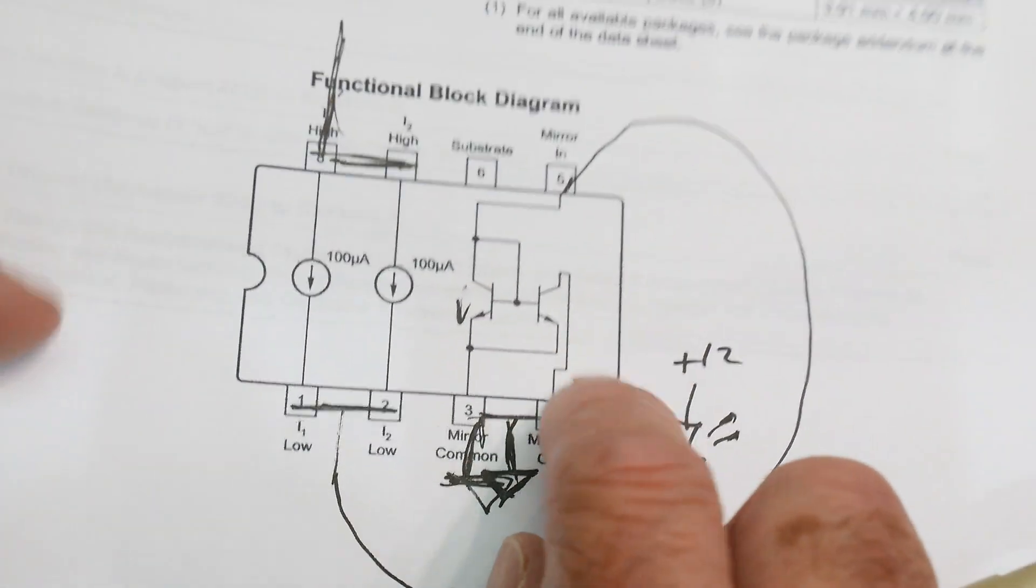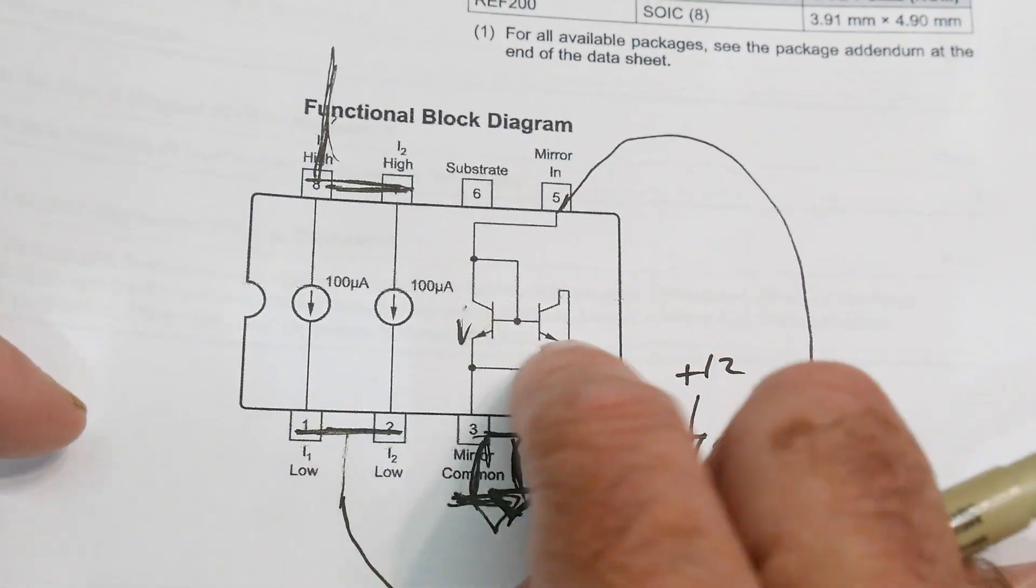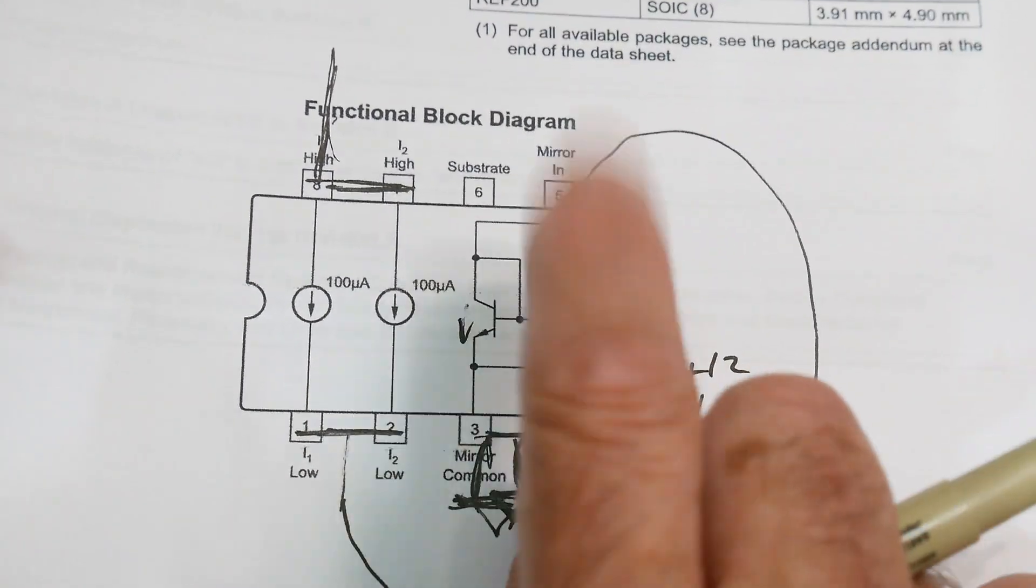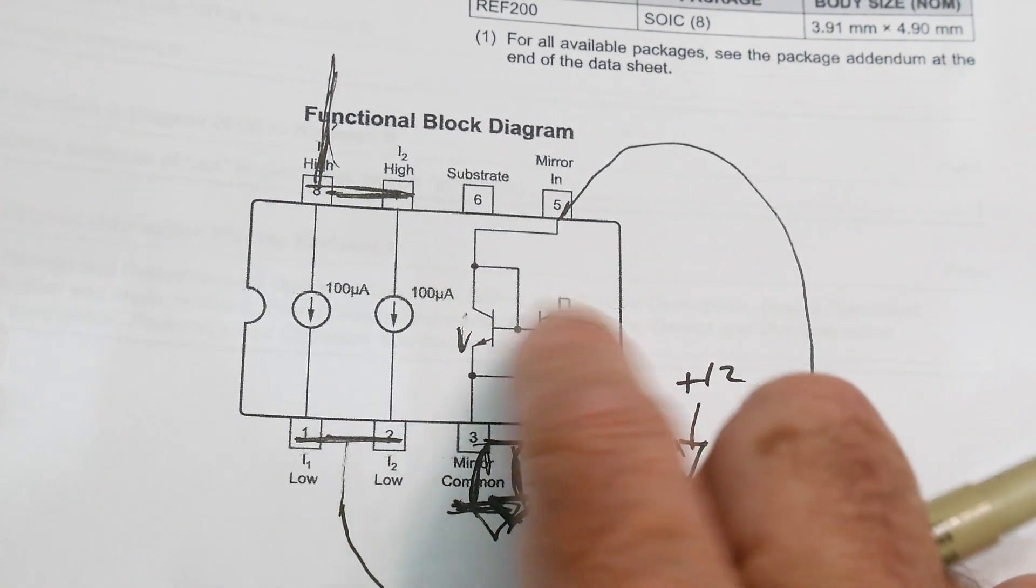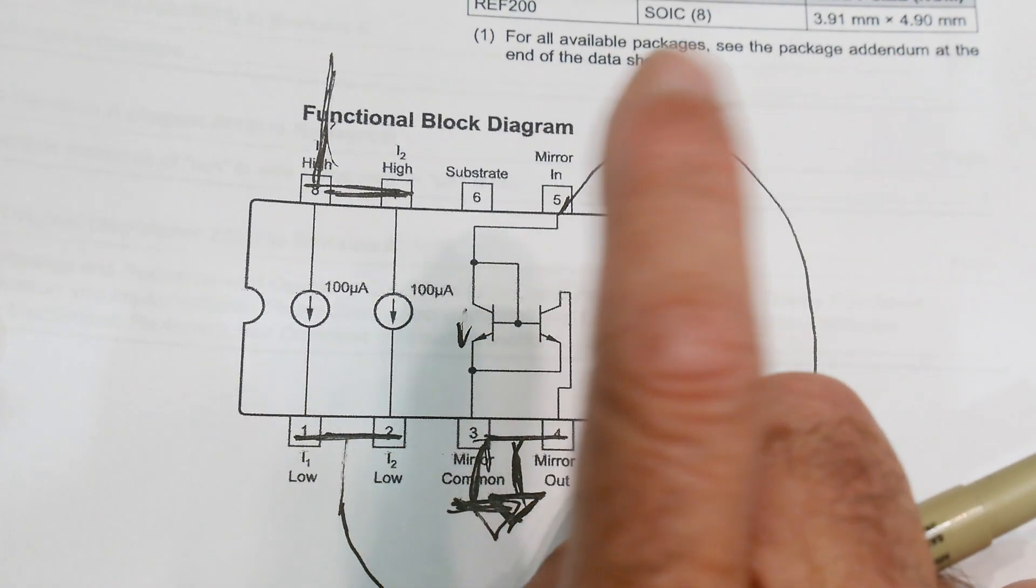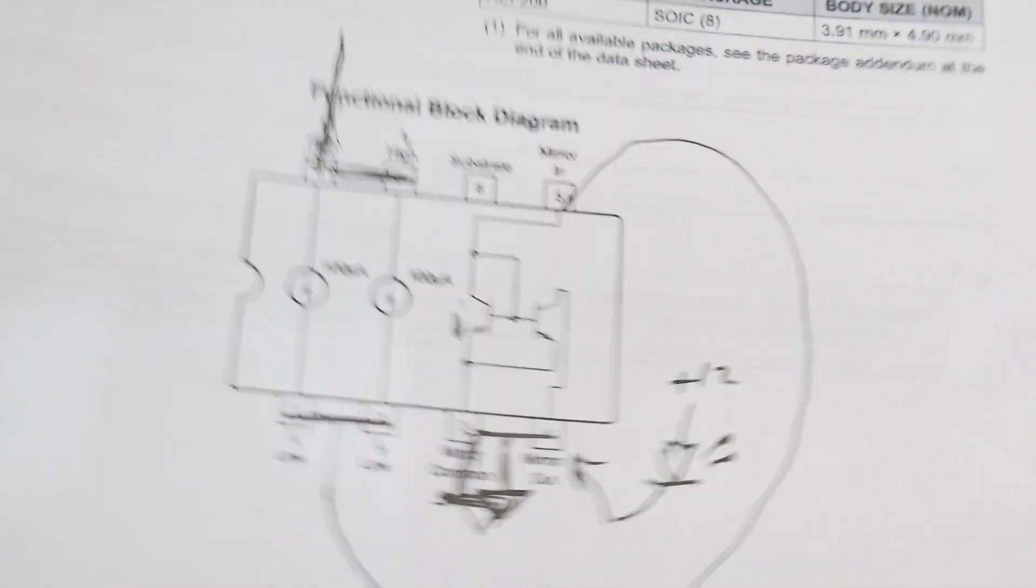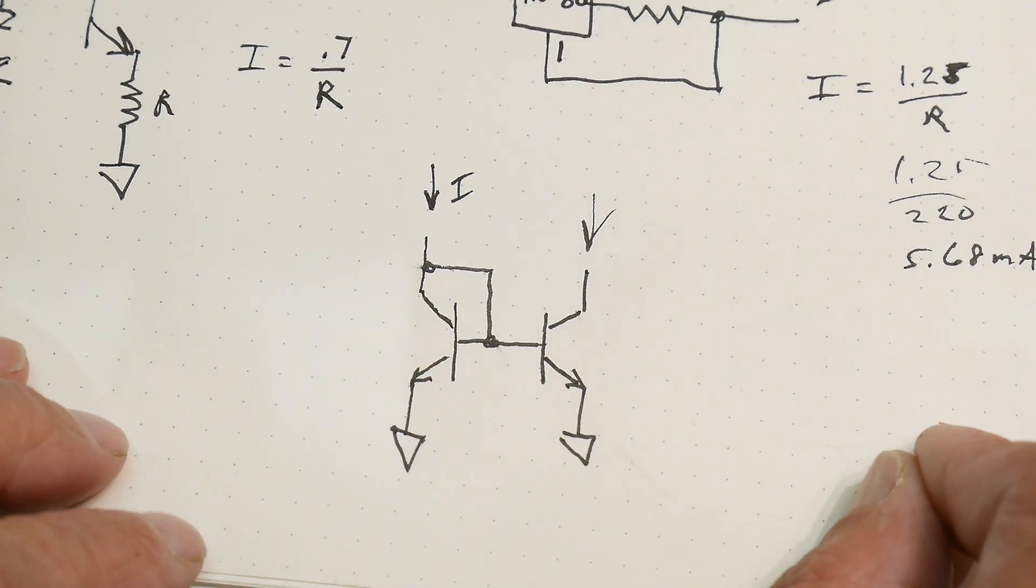So that's why these little devices are really nice because this is monolithic. These two transistors are going to be matched perfectly because they're made in the same process. They're also on the same substrate, so they're matched thermally perfectly as well. So these make really nice little current mirrors if you need them. Okay.